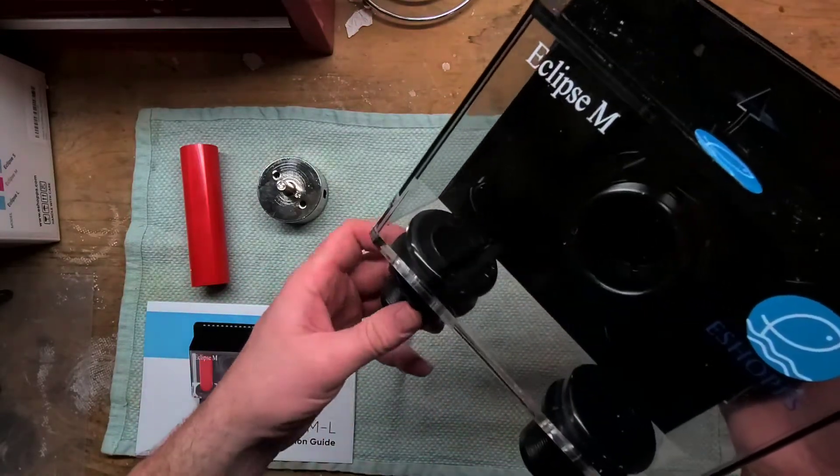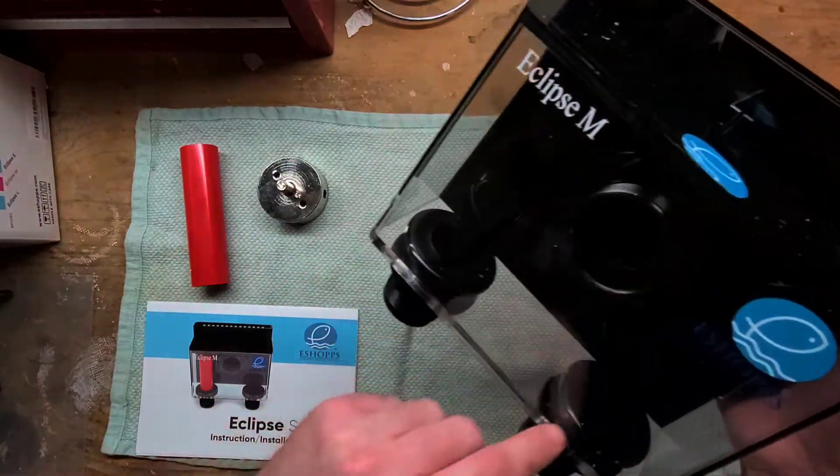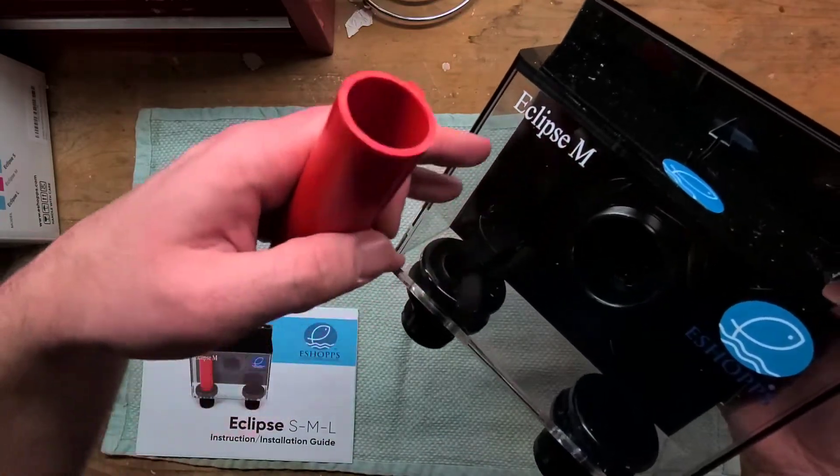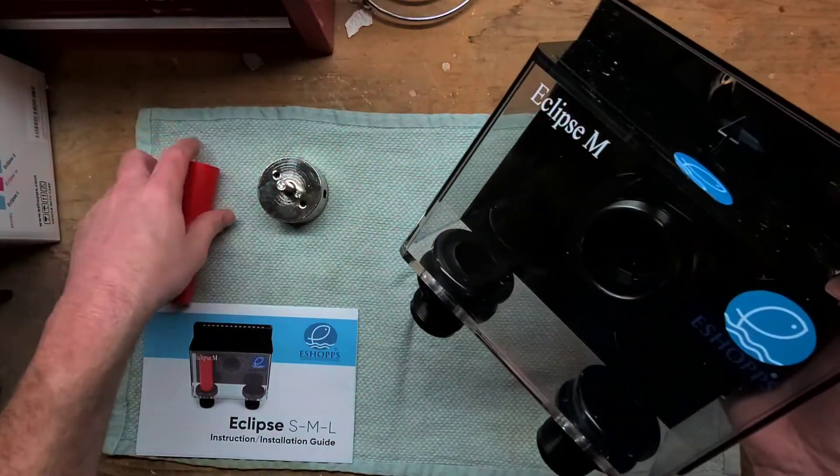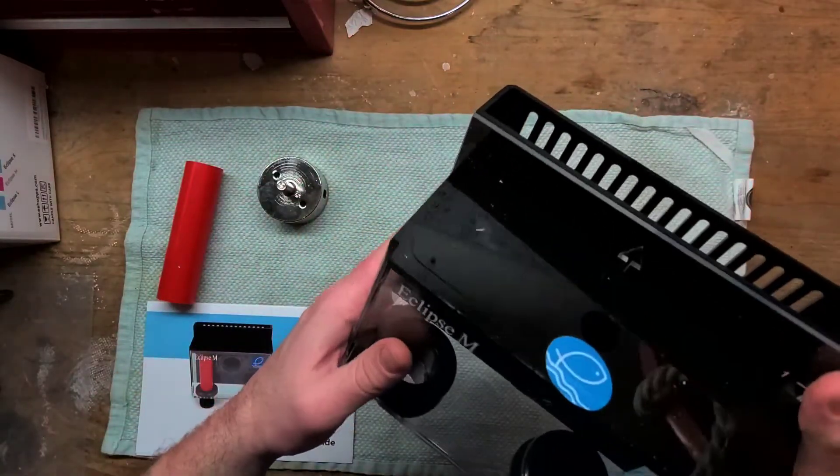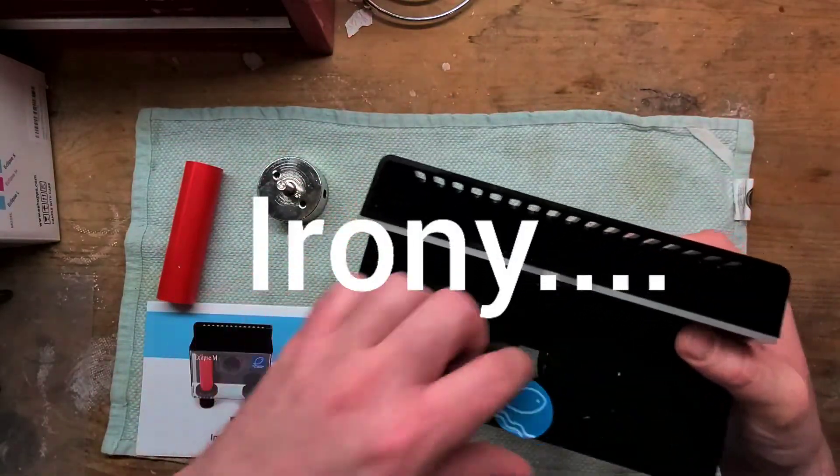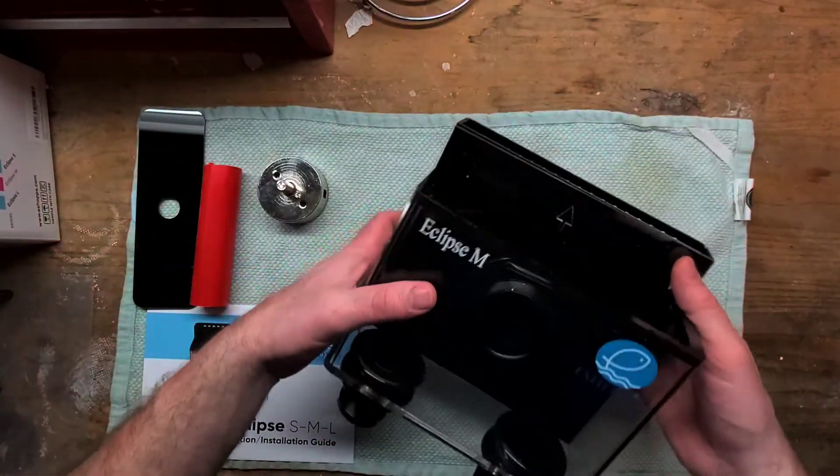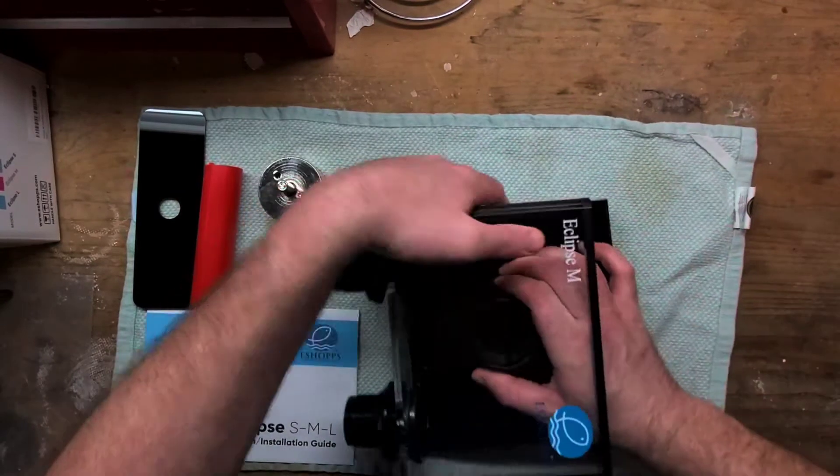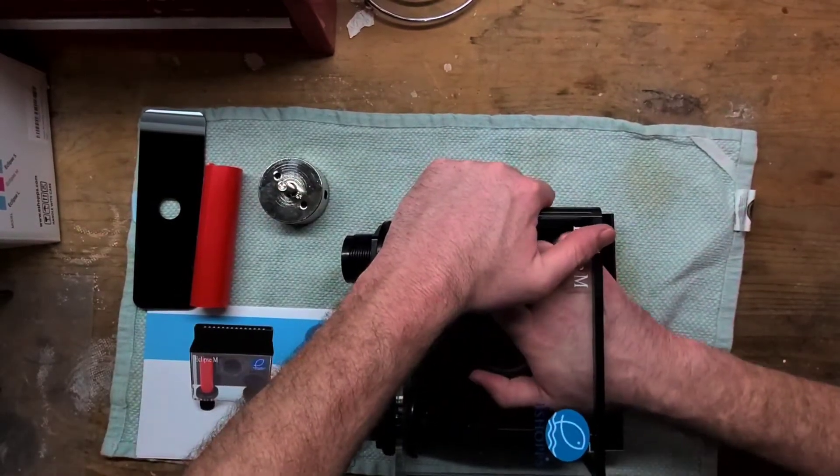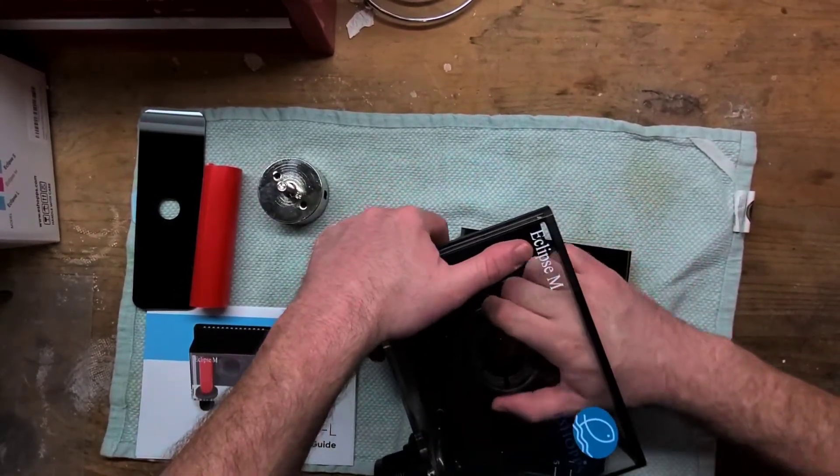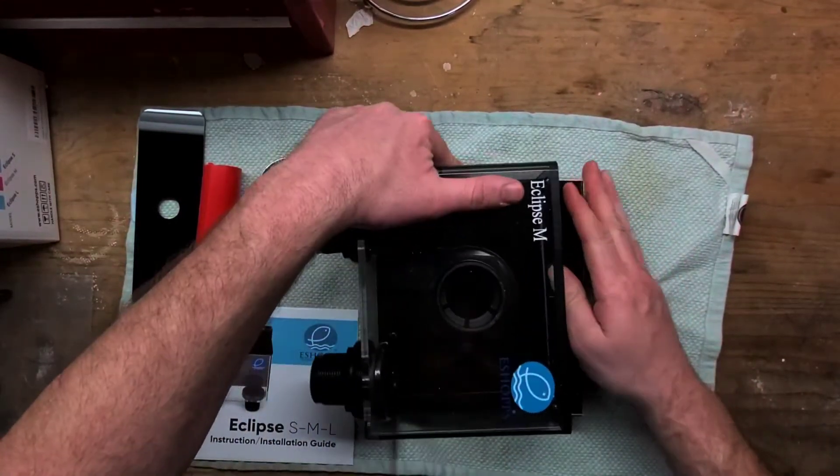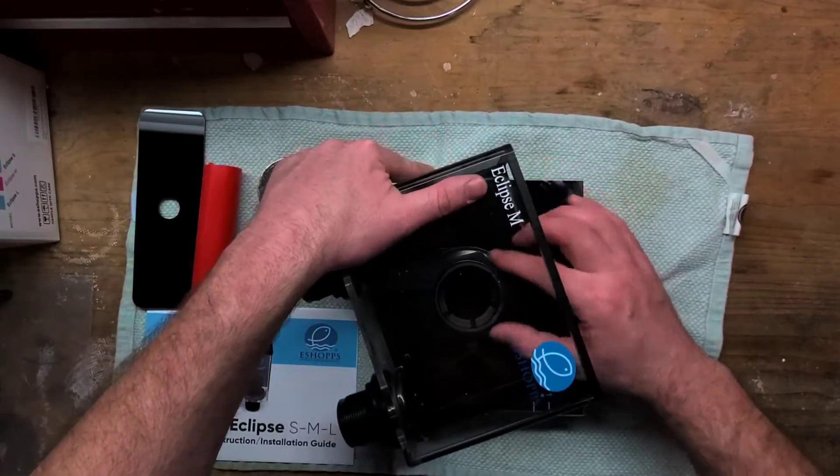Either one of them could be my main drain and the other one will be the emergency drain. Emergency drain meaning if one of these gets blocked it can now drain through this to prevent the overflow box from overflowing. Let's take it apart, take the lid off. I turned it counterclockwise a little bit and it loosened up.